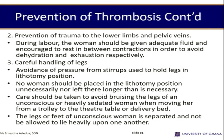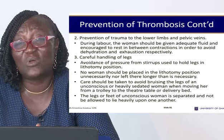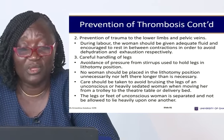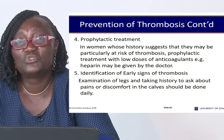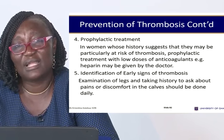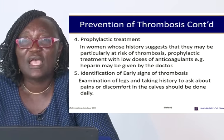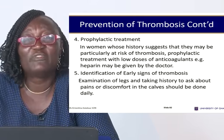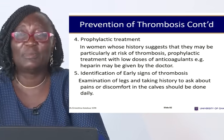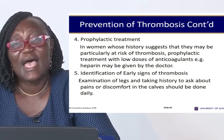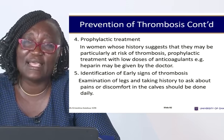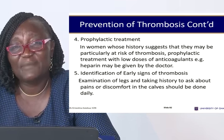Avoid pressure on the legs. If a woman is in the lithotomy position with stirrups for a prolonged time, this increases the tendency to develop thrombosis. For prophylactic treatment in women predisposed to thrombosis, give very low doses of anticoagulants such as heparin — emphasizing very low doses because anticoagulants in pregnancy can harm the pregnancy. Identify early signs of thrombosis by examining the woman's legs at postnatal clinic; painful calf muscles are an early sign.